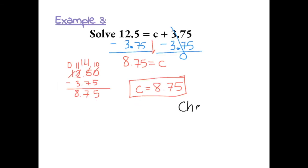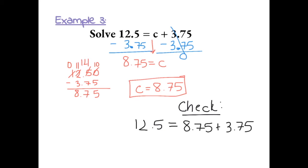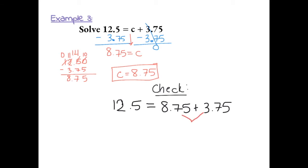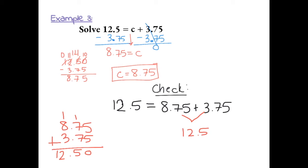You can check your answer by taking the value you got for the variable and plugging it back into the original equation. So I have 12.5 equals 8.75 plus 3.75. Lining up the decimals: 5 plus 5 is 10, 7 and 7 is 14 plus 1 is 15, 8 plus 3 is 11 plus 1 is 12, giving us 12.50, which is the same as 12.5. So we know our answer is correct.